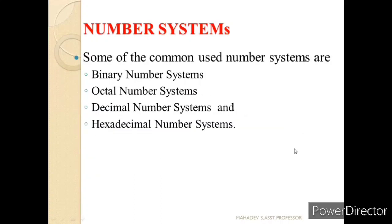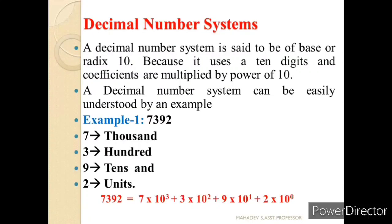Now let us see the different types of number systems. The commonly used number systems are: binary number system, octal number system, decimal number system, and hexadecimal number system. We are familiar with the decimal number system since childhood. The decimal number system is of base 10, or radix 10, because it uses 10 digits, and the coefficients are multiplied by the powers of 10.